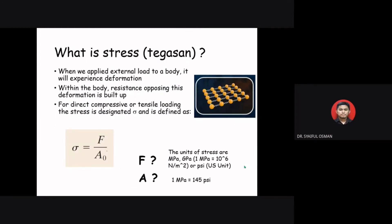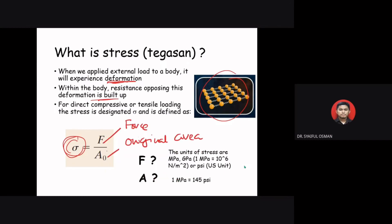In mechanics and material science, stress — represented by the Greek letter sigma (σ) — is a physical quantity that expresses the internal forces that neighboring particles of a continuous material apply on each other. If you apply external loading to a body, it will experience deformation and resistance that opposes this deformation builds up within the body. For direct compressive or tensile loading, stress is defined as force divided by the original cross-sectional area. The unit of stress is megapascal (MPa) or gigapascal (GPa), where 1 MPa equals 145 psi.